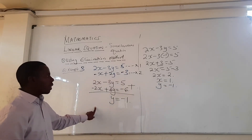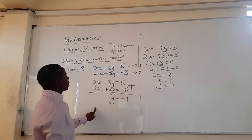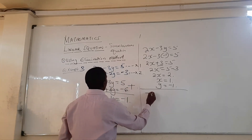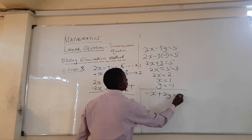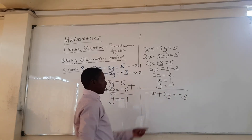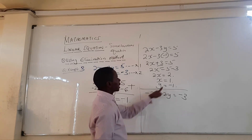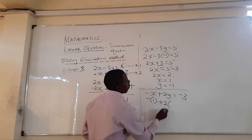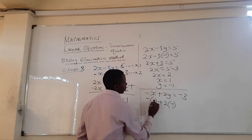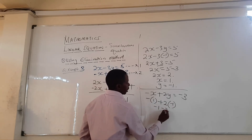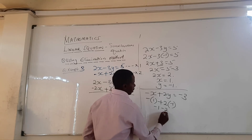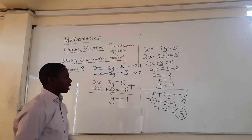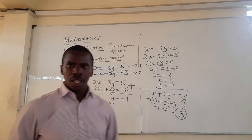We check the answer by substituting into equation 2: minus x plus 2y equals minus 3. Replacing x with 1 and y with minus 1: minus 1 plus 2 times minus 1 equals minus 1 plus minus 2, which equals minus 3. This corresponds to what we have, so our answer is correct.